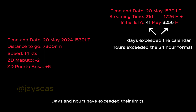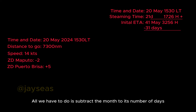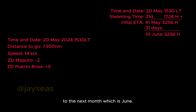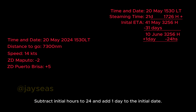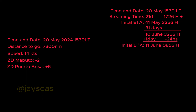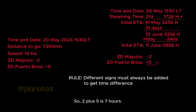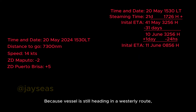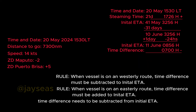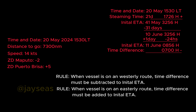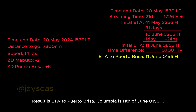Days and hours have exceeded their limits. Subtract the month to its number of days and replace May with the next month, June. Subtract initial hours by 24 and add one day to the date. Now, unlike same signs, different signs must always be added to get the time difference: 2 plus 5 is 7 hours. Since the vessel is still heading westerly, the time difference is subtracted from the initial ETA. Result: ETA to Puerto Brisa, Colombia is 11th of June, 0156 hours.